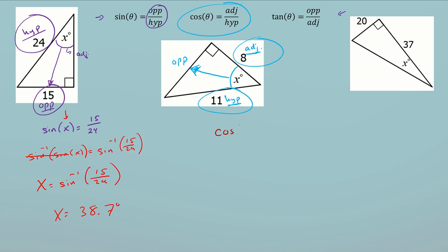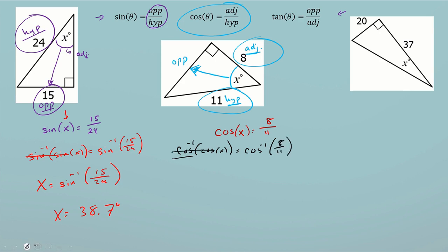I need to figure out which trig function has both adjacent and hypotenuse — that's cosine. So cosine of x equals the adjacent side, which is 8, over the hypotenuse, which is 11. I'm looking for my angle of reference, so I need to cancel this cosine using its inverse. Cosine inverse of cosine of x equals... what we do to one side we must do to the other, so the right side becomes cosine inverse of 8 over 11. The cosine inverse and cosine cancel, leaving x equals cosine inverse of 8 over 11.